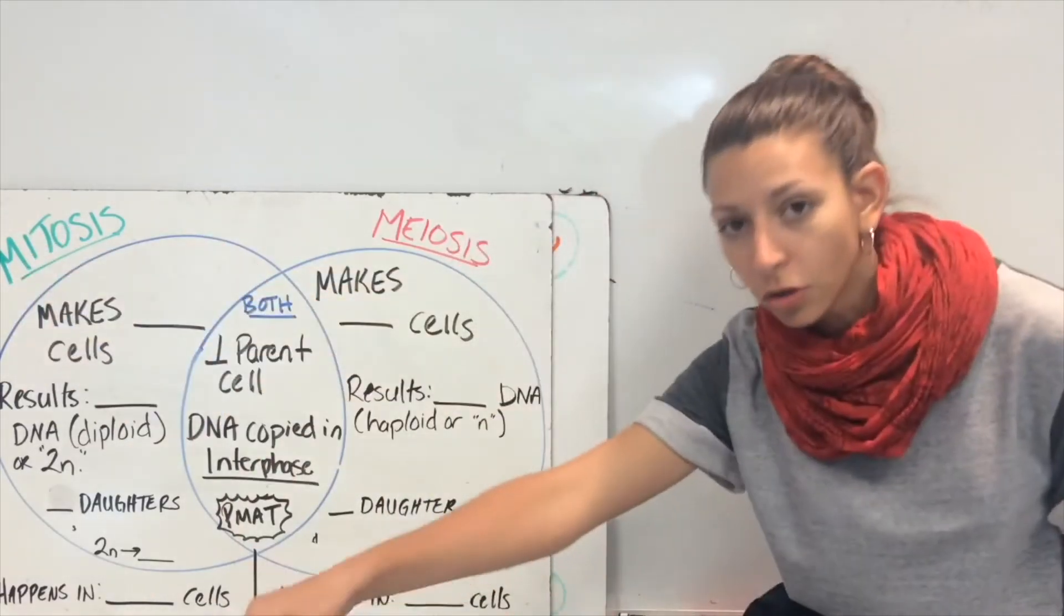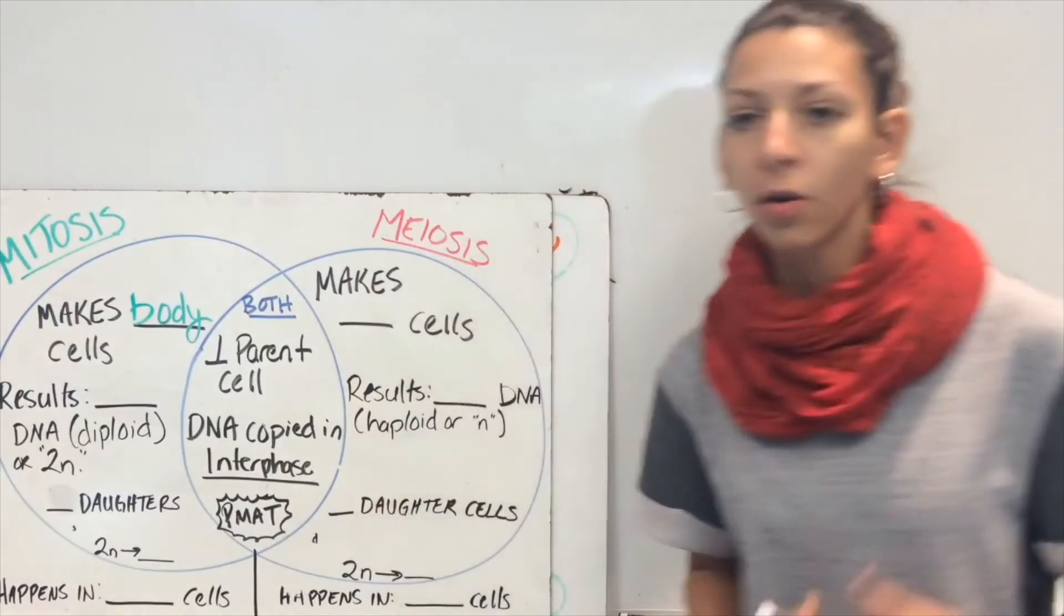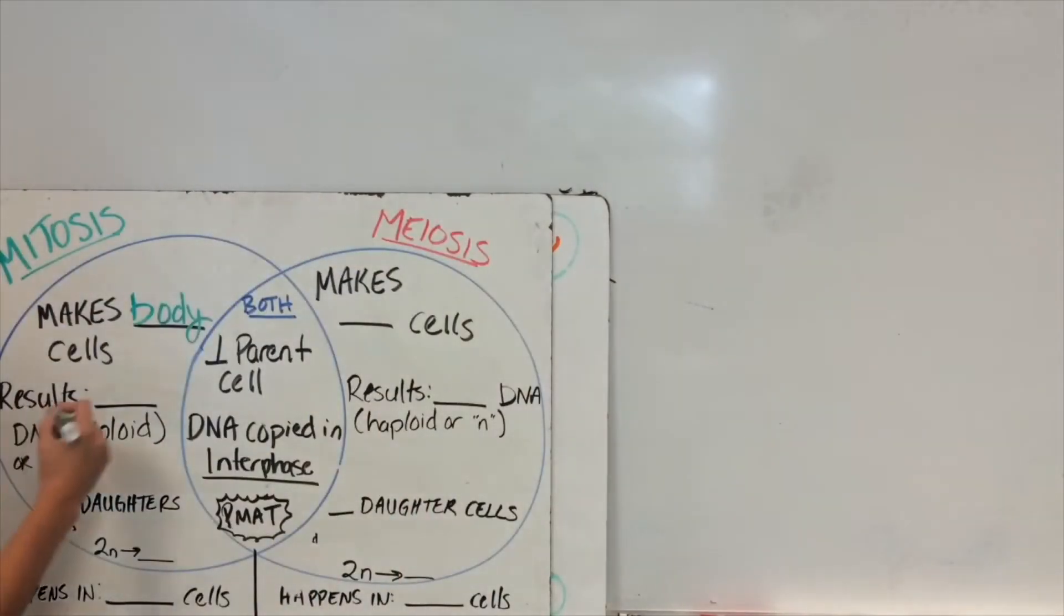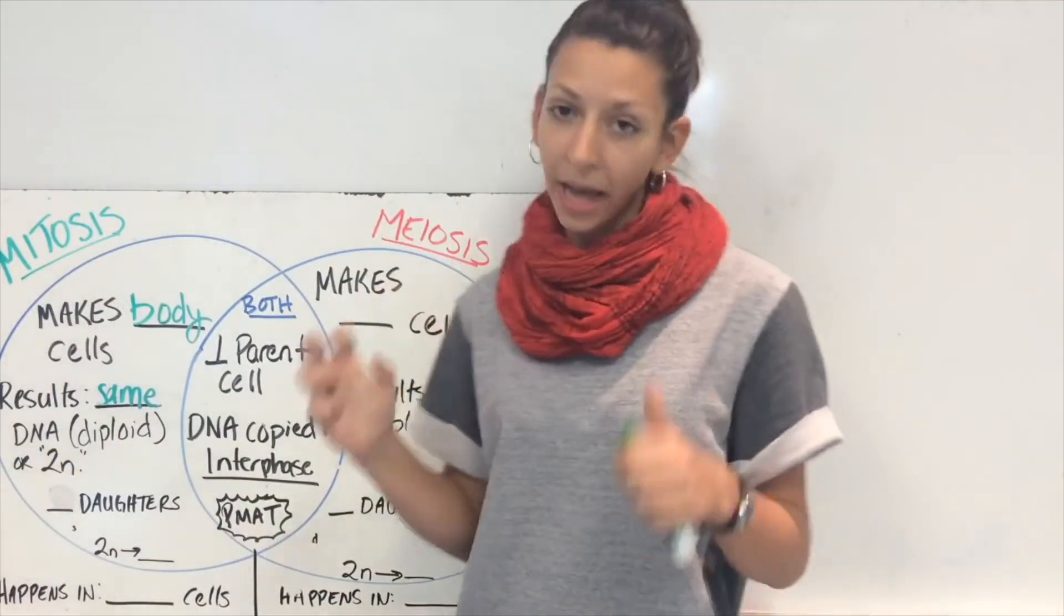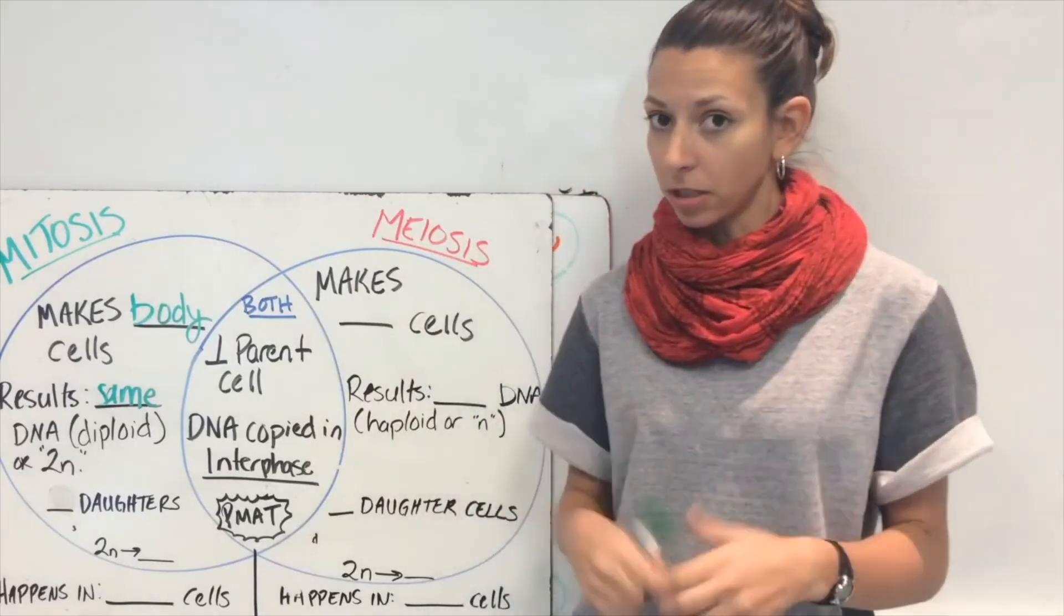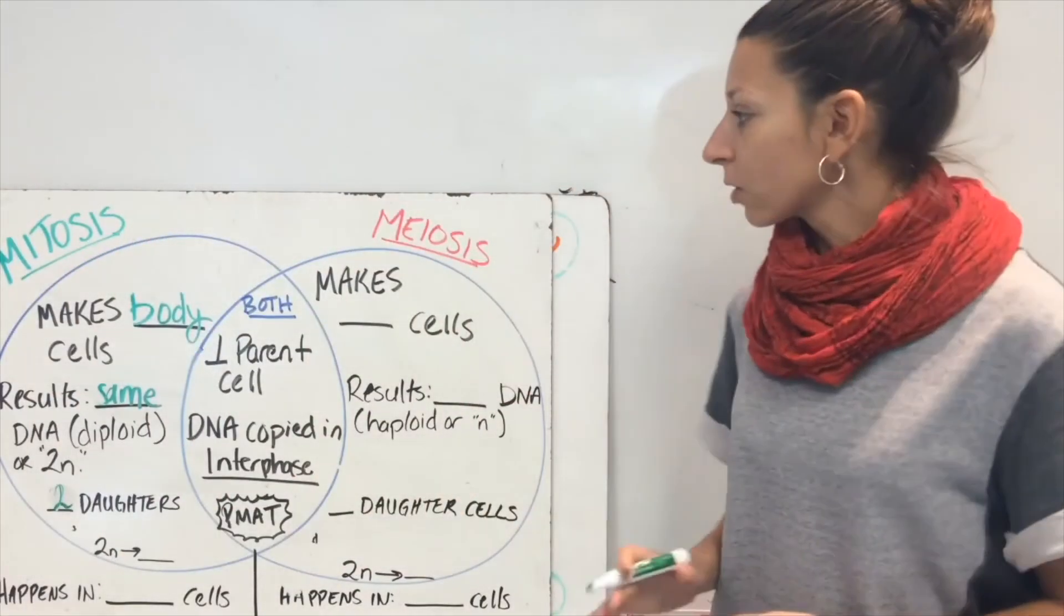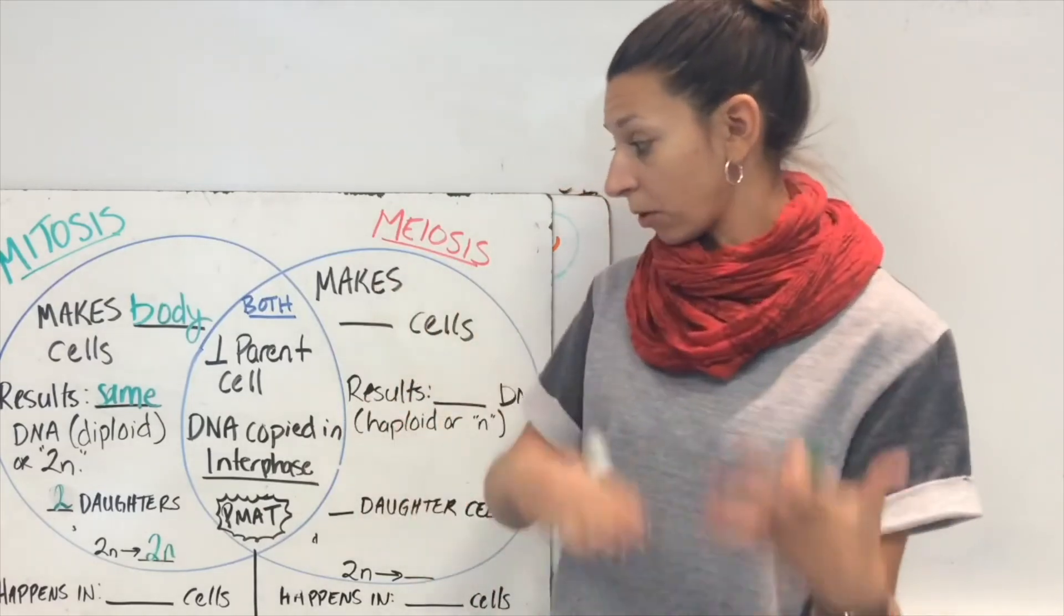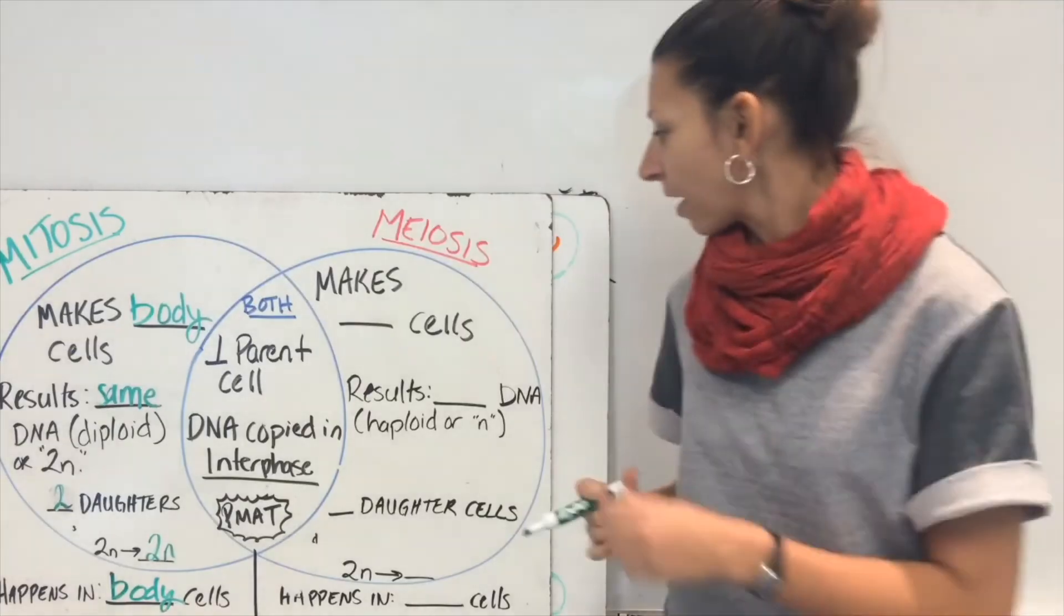Okay, let's start with mitosis. Think mitosis. My toe, your toe, it's part of your body. So it's going to make your body cells or regular somatic cells. Our results are going to be the same amount or the same quantity of DNA. So we'll call this diploid or 2N. 2N is a full set of DNA or diploid is a full set of regular DNA. This will result in two daughter cells. And again, we're going from a parent cell with 2N and we're resulting in daughter cells with 2N. So we're going from 2N to 2N, diploid to diploid. And this, of course, is going to happen in our body cells.